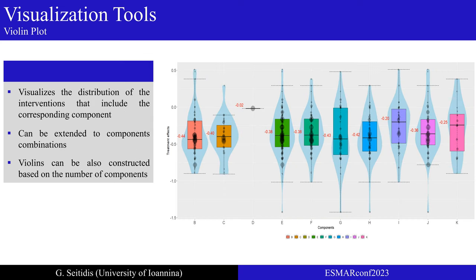Similar to the components heat plot is a violin plot in which each violin displays a distribution of the NMA relative effects based on the nodes that include the corresponding component. Therefore, by comparing the violins, we can identify if there are components that are associated with larger effects. The precision of the NMA estimates is also reflected by the size of the dots. The violin plot can be adjusted to use Z scores and can be extended also to component combinations. Furthermore, by constructing the violins based on the number of components that are included in the nodes, we can explore if the efficacy of the intervention is affected by the number of components.